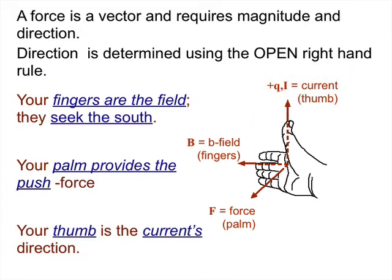So fingers are the field, they seek the south. The palm is the push, and a push is a force. And your thumb is the current, or the flow of positive charge.